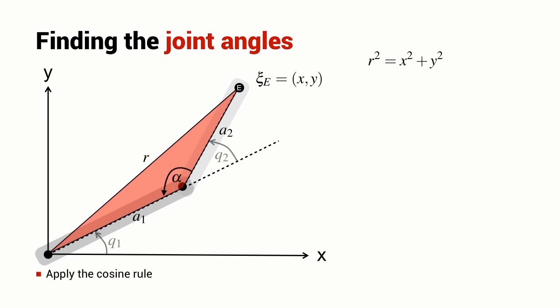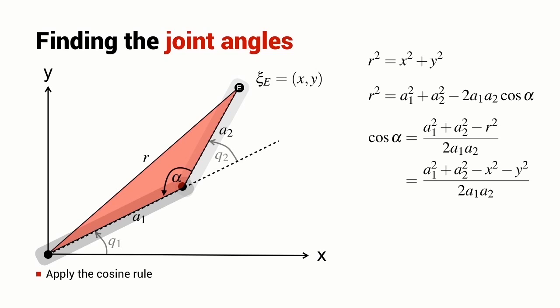Now let's apply the cosine rule to the particular triangle we looked at a moment ago. It's pretty straightforward to write down this particular relationship. We can isolate the term cos alpha, which gives us the angle alpha that we are interested in. And it's defined in terms of the constant link lengths A1 and A2 and the position of the end effector X and Y.